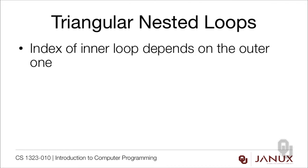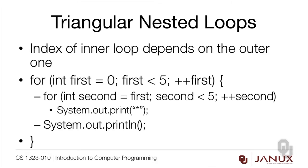Triangular nested loops are a little bit different — here the index of the inner loop depends on the outer one. The outer for loop is exactly the same: int first equals zero, first less than five, plus plus first. But look at the difference in the inner loop: int second equals first, second less than five, plus plus second. Now second and first are interacting, so the inner loop starts at a different point each iteration. The first trip prints five asterisks, the second four, the third three, and so on — giving a triangular pattern.